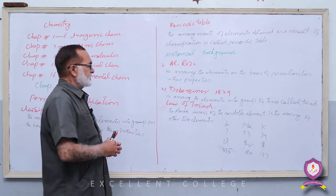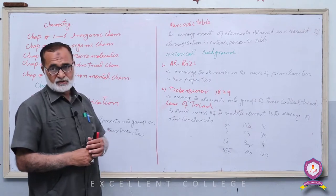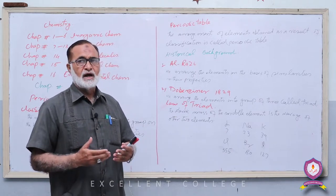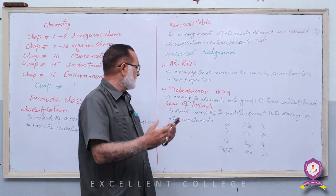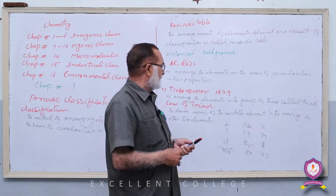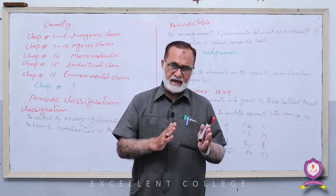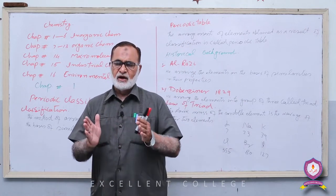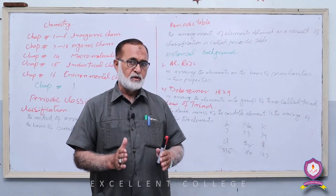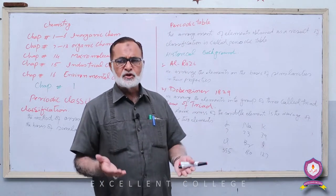اس کے بعد دوسری attempt scientist Dobereiner نے کی، جس نے 1829 میں elements کو Triads کی صورت میں classify کیا اور اپنے اصول کو Law of Triads کا نام دیا۔ The arrangement of elements into groups of three is called Triads — یعنی elements کو تین تین کے groups میں properties کی بنیاد پر تقسیم کیا جاتا ہے۔